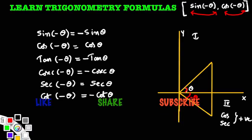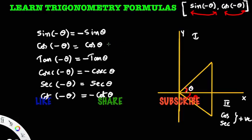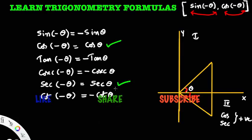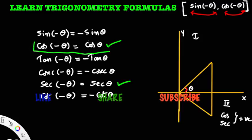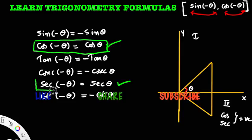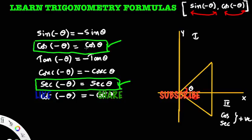So you can remember these formulas very easily. Observe: cos of minus theta is plus cos theta, and secant of minus theta is secant theta — these two are positive. Remaining all are negative. The reason is that minus theta lies in the fourth quadrant, and in the fourth quadrant cos and secant are positive. That's it!